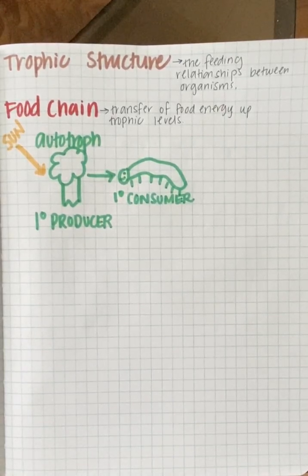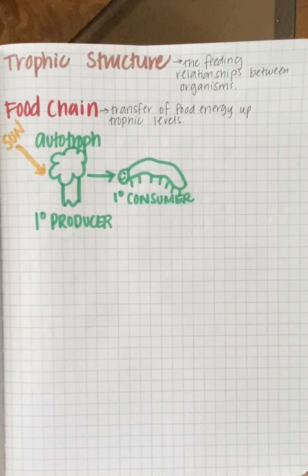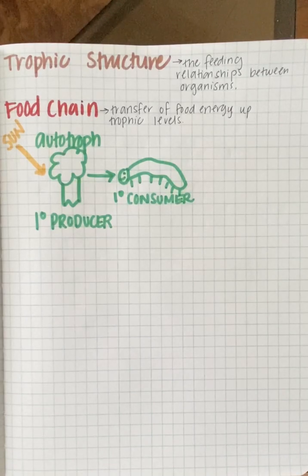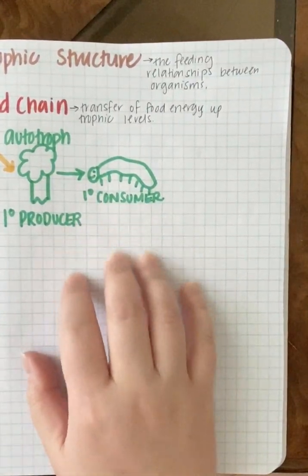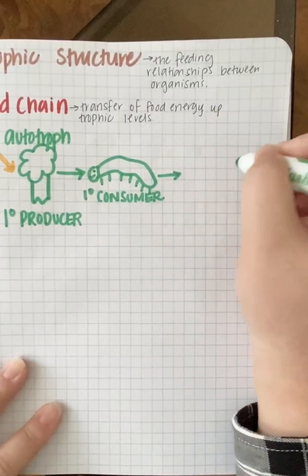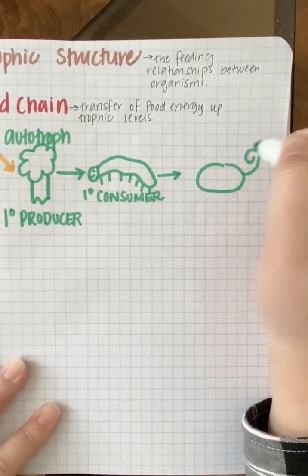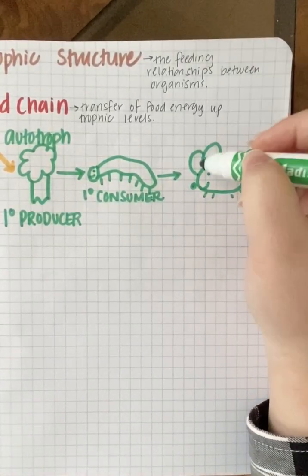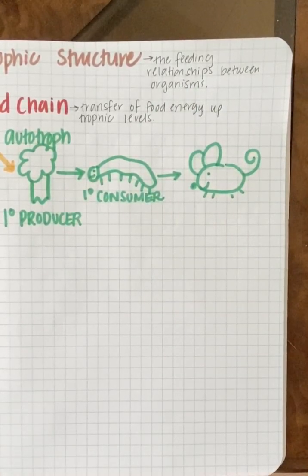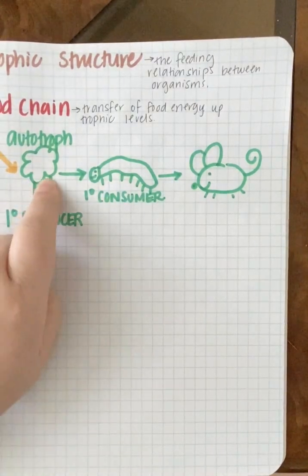Primary consumers can be omnivores or survive purely on plant-based food. Those are our primary consumers. Then organisms that consume our primary consumers — let's say this caterpillar gets eaten by a mouse. The mouse eats the caterpillar; we're just transferring energy from one organism to the next.